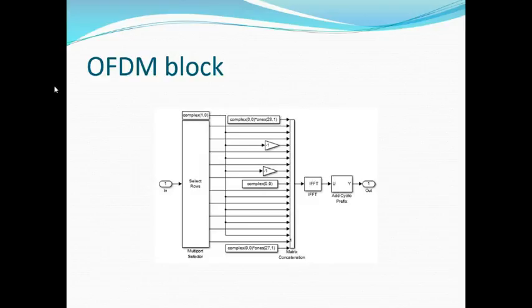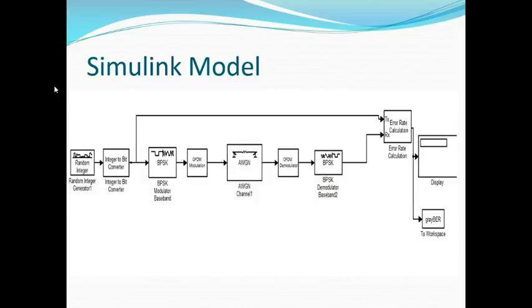Inside the OFDM block, we perform the inverse fast Fourier transform, and there is a block to add a cyclic prefix in order to reduce ISI. Once the information is modulated using the OFDM technique, it is transmitted through the additive white Gaussian noise channel. At the receiver end, we have an OFDM demodulation block followed by the demodulator to recover the original information, and an error rate calculation block is used to find the bit error rate.